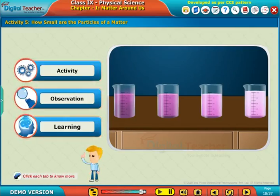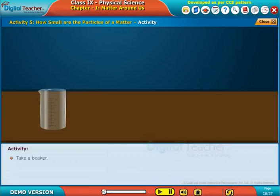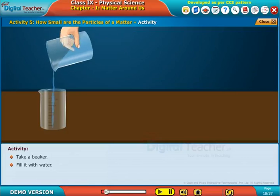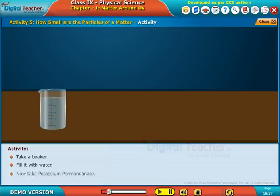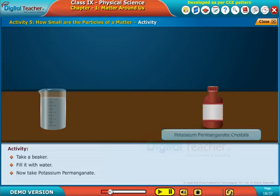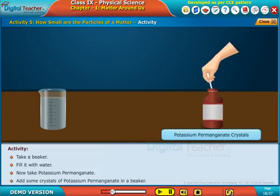Click each tab to know more. Take a beaker, fill it with water. Now, take potassium permanganate. Add some crystals of potassium permanganate in the beaker.